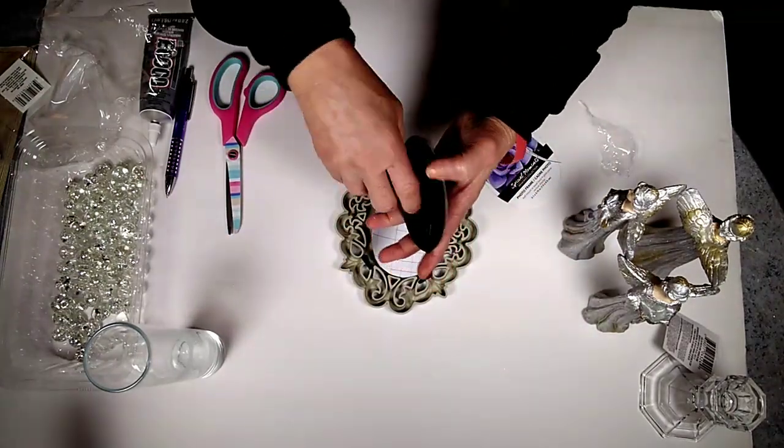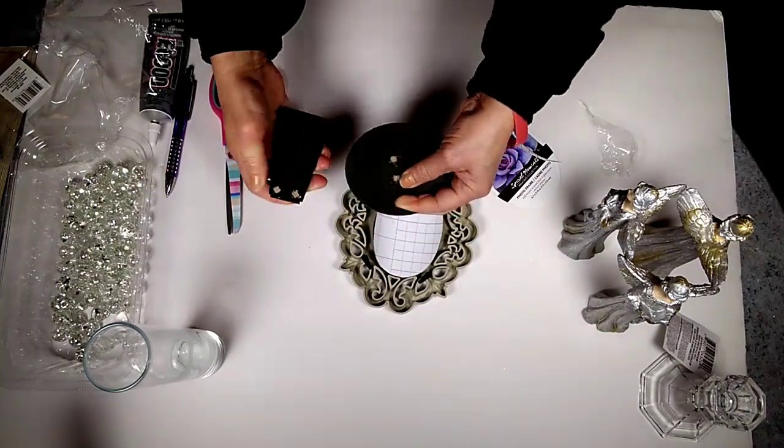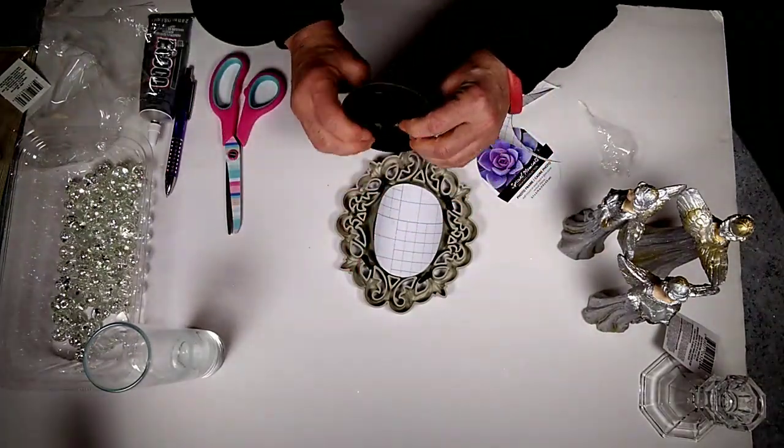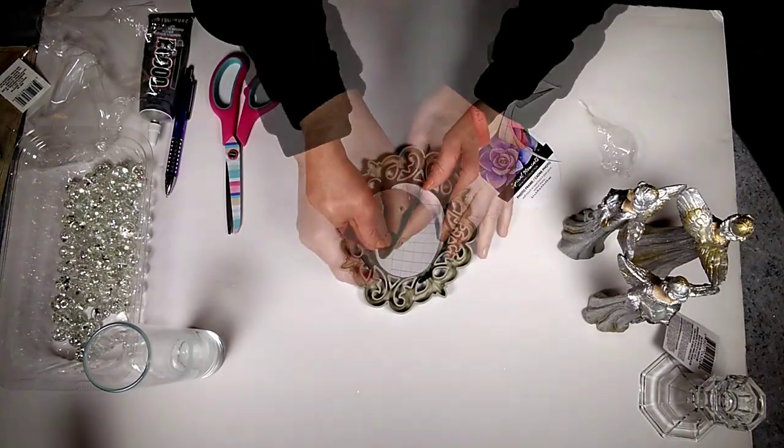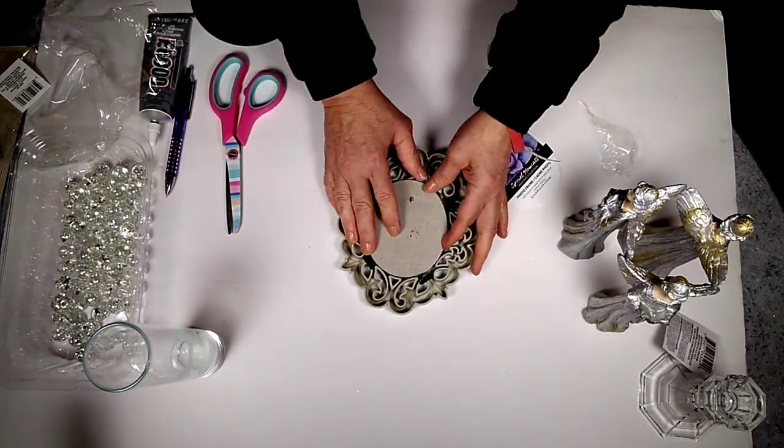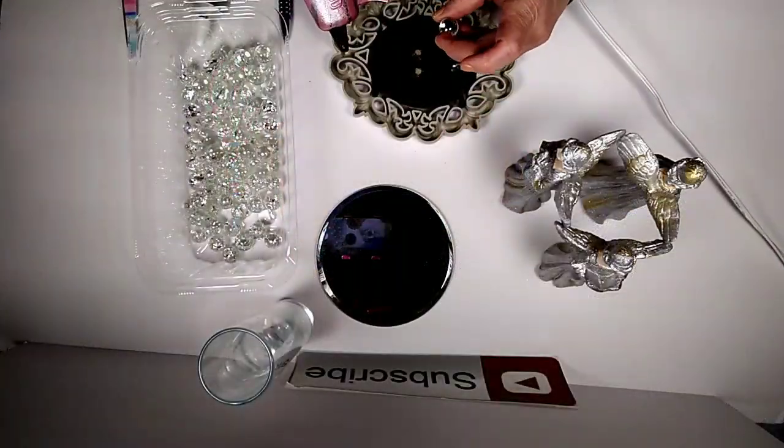I'm going to remove the table stand that comes attached to that picture frame insert, and I'm going to also remove that little loop that it comes with so that you can hang it up on the wall. Then I'm going to put the insert back in the picture frame.